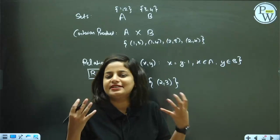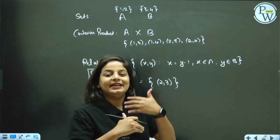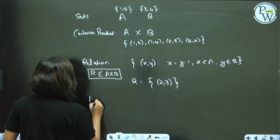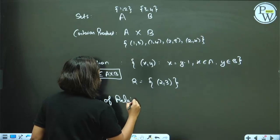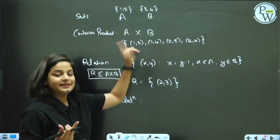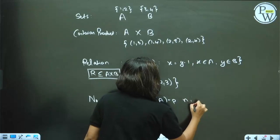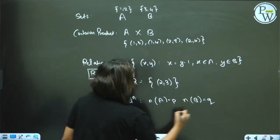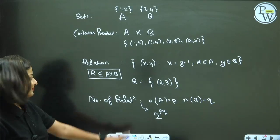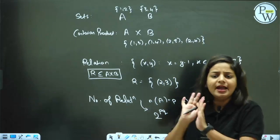Just like human beings have relations, mathematical numbers and elements have relations among them. The total number of relations that can be formed equals the total number of subsets of the Cartesian product. If set A has P elements and set B has Q elements, then the total number of relations is given by the formula 2 raised to PQ. A relation set is simply a subset of Cartesian product A into B — remember that.